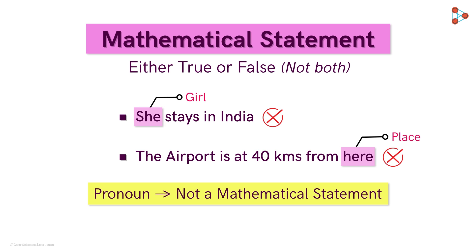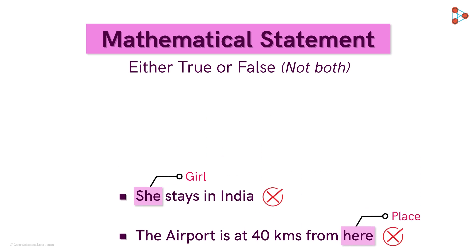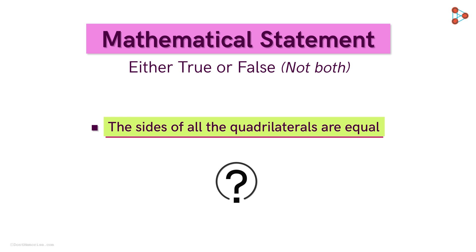Are you ready to try out a few more examples? Okay, here we go. Consider this statement. The sides of all the quadrilaterals are equal. Is this a mathematical statement? Yes, it is. Because we definitely know that it's a false statement. Remember, it could either be true or false. It doesn't only have to be true.